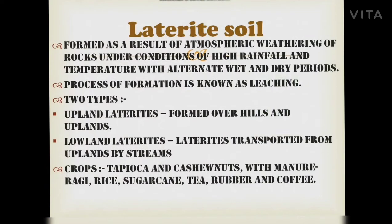Laterite soil is formed as a result of atmospheric weathering of rocks under conditions of high rainfall and temperature with alternate wet and dry periods. This process is known as leaching — the process in which nutrients get percolated down below the soil due to heavy rainfall, leaving the topsoil infertile. This is also known as laterization.